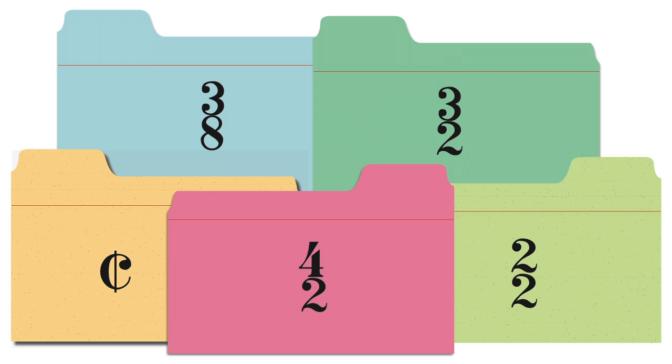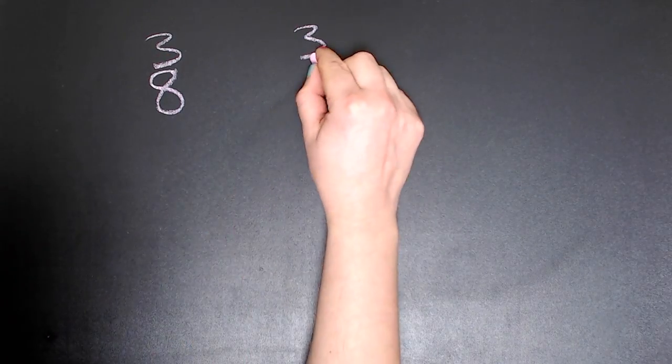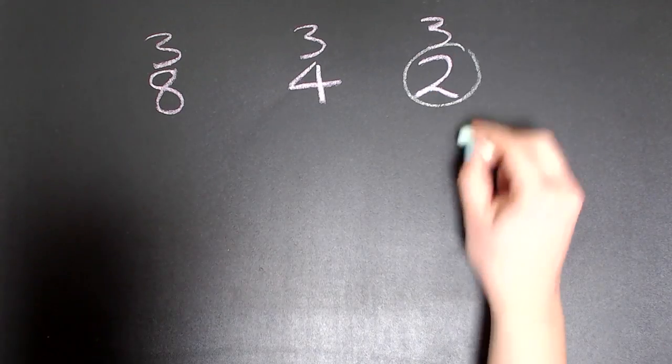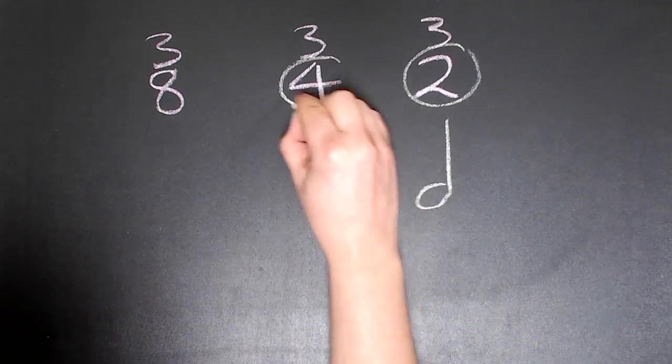Note values and rhythms are organized by time signatures. The bottom number tells us about the type of beats. A 2 at the bottom tells us we're using half note beats.